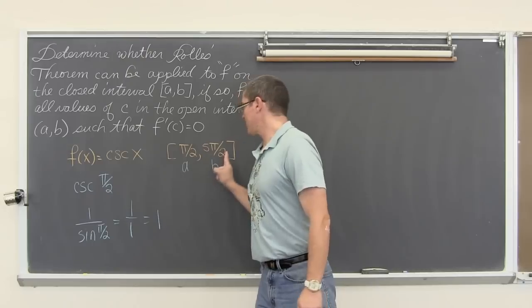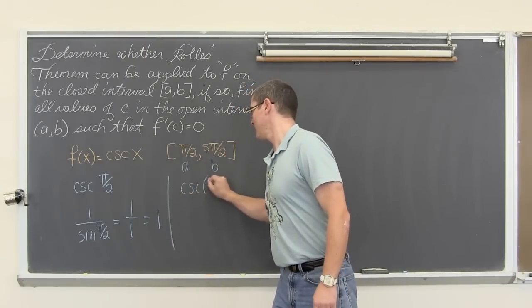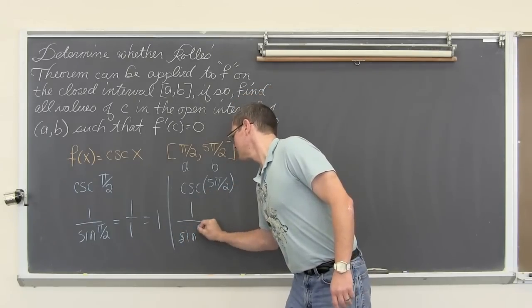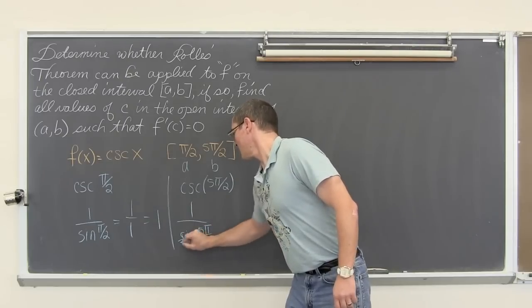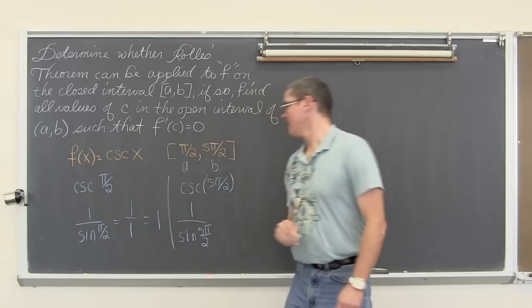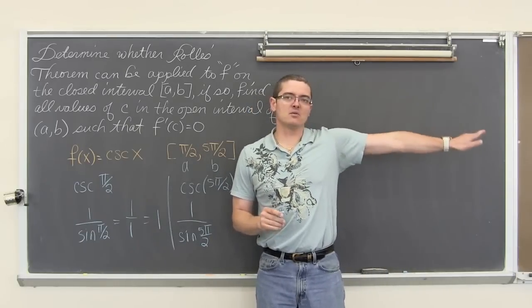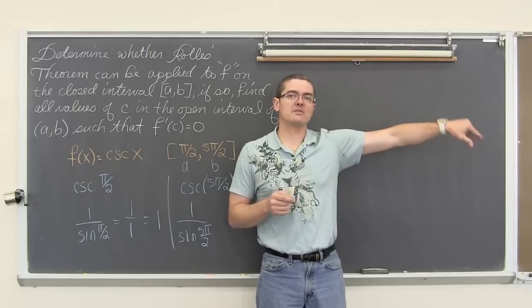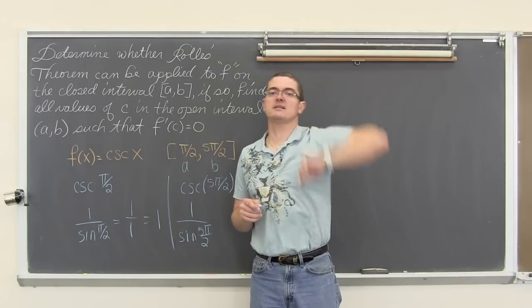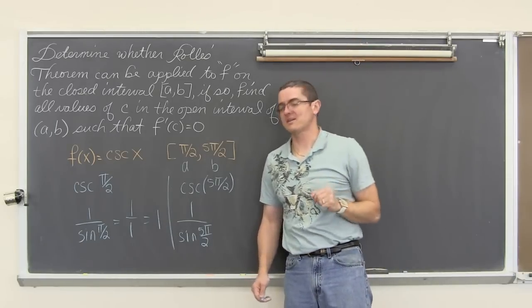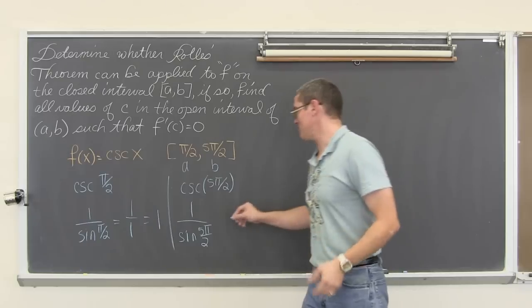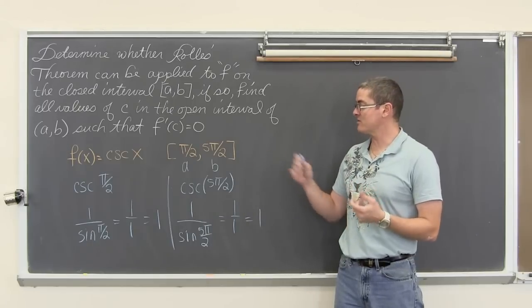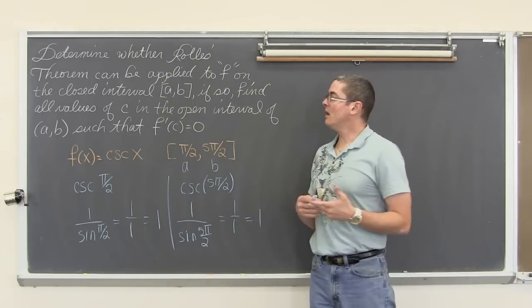So now let's check five pi over two. Cosecant of five pi over two is again one over the sine. I write a lot better not trying to do this backwards. There we go. The sine of five pi over two, so that is zero radians, pi over two, two pi over two, three pi over two, their sine would be negative one, four pi over two, and then finally five pi over two. So we are back up to that ninety degrees, the positive y axis. So the sine of five pi over two again is equal to one. So f(a) is equal to f(b). The function of pi over two is the same as five pi over two. So why can't we apply Rolle's Theorem?